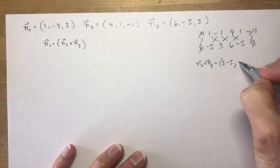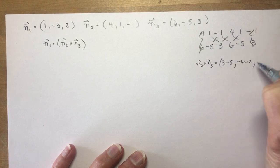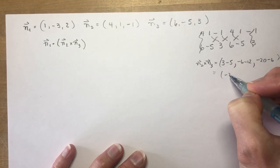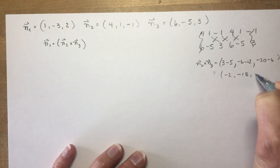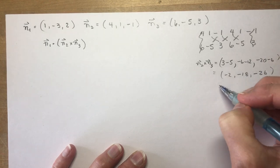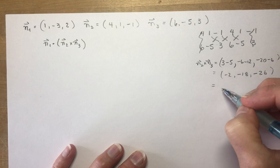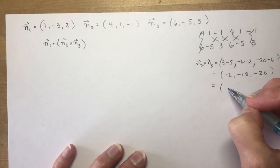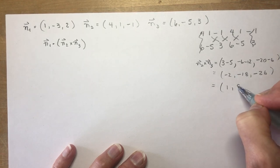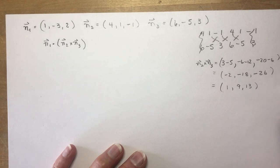Minus 6, minus 12. And minus 20, minus 6 more. So, that's going to give me minus 2, minus 18, and minus 26, which I'm going to reduce because I don't like these big numbers and I don't like negatives. So, I'm going to make it 1, 9, and 13. So, all I did was divide by minus 2.